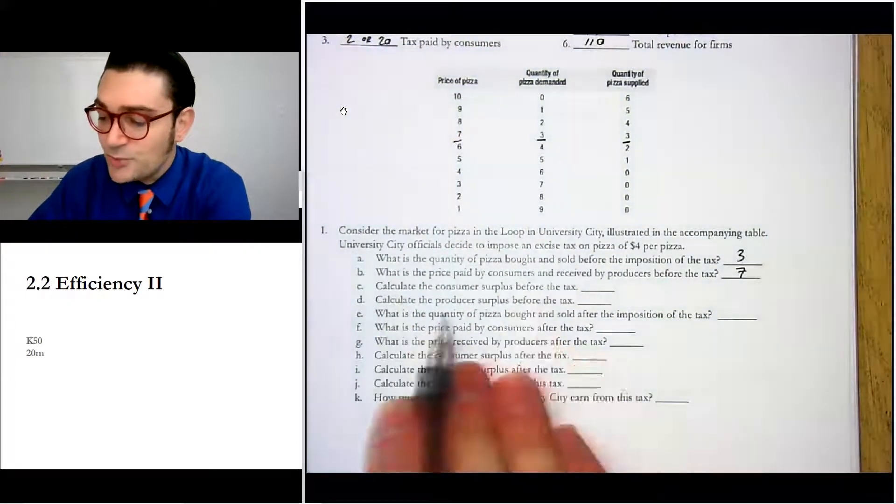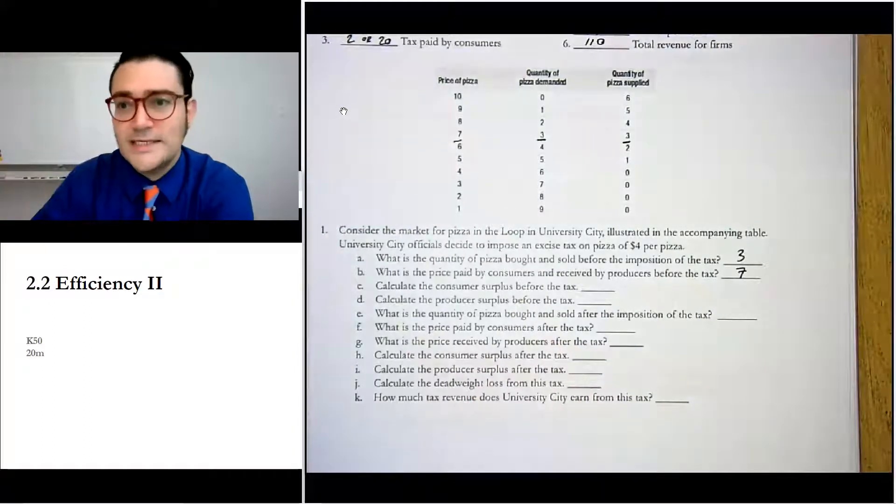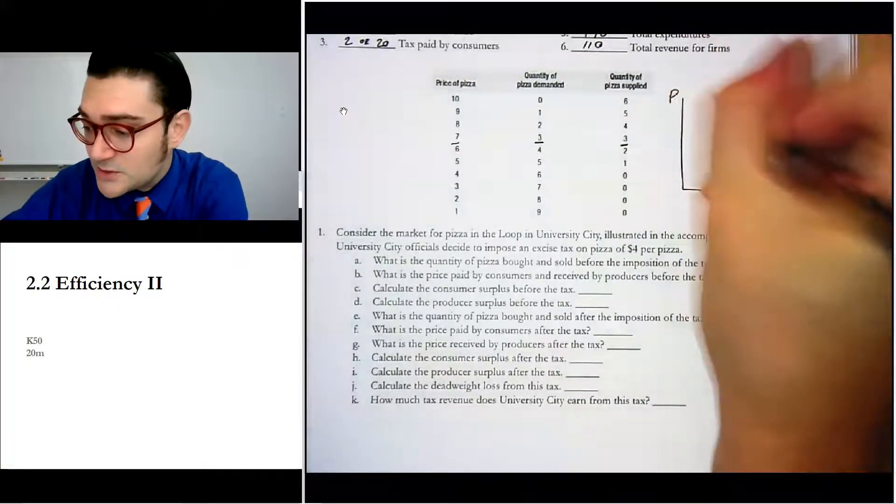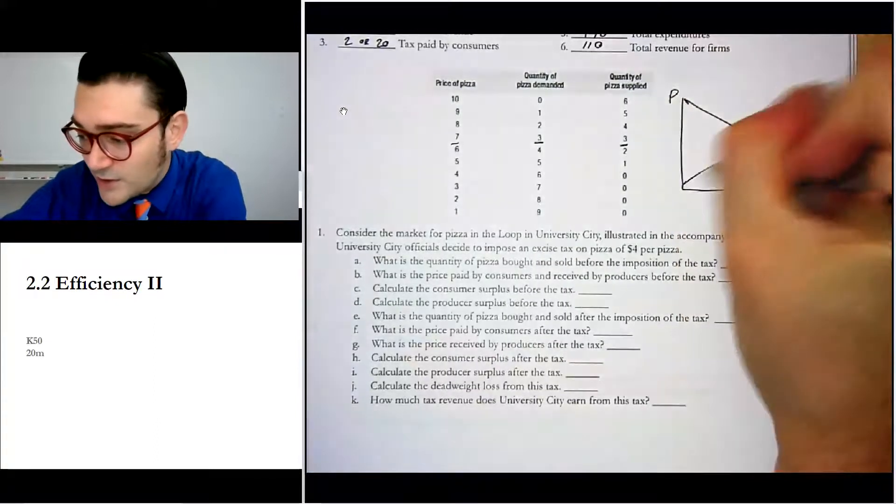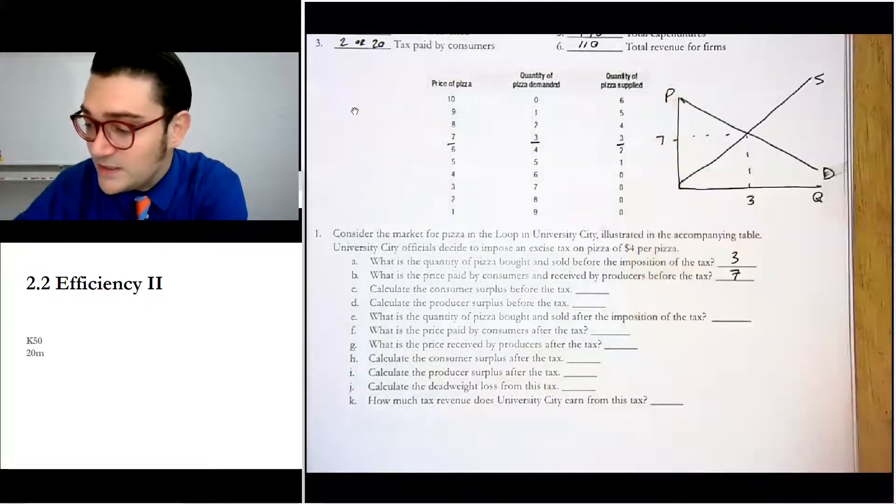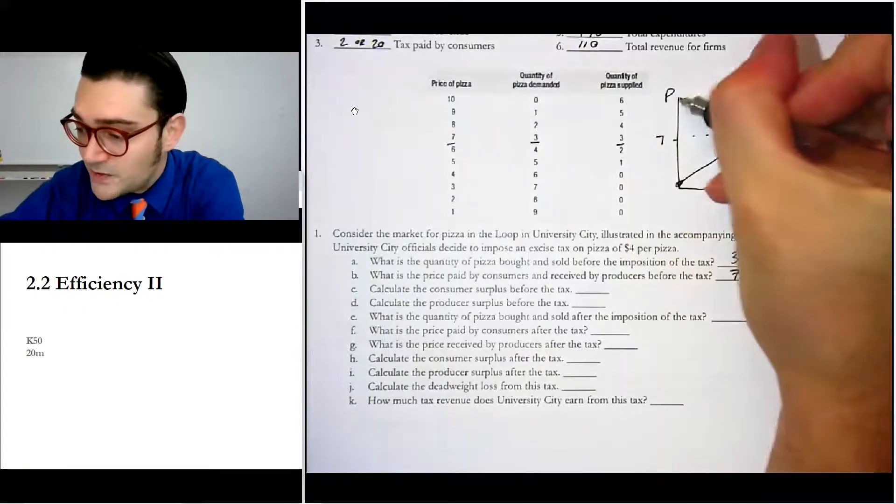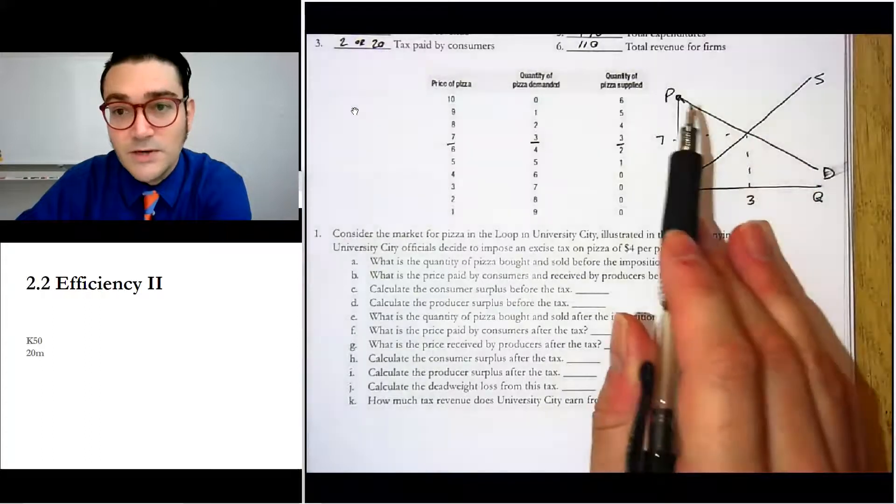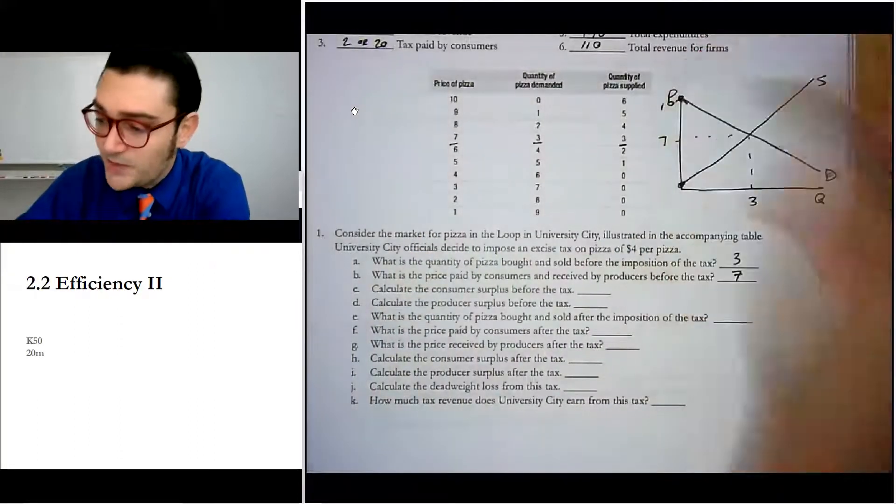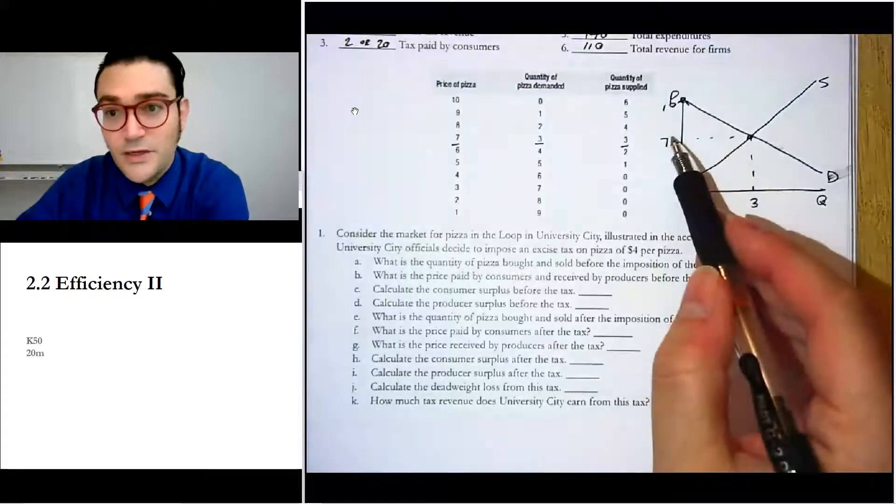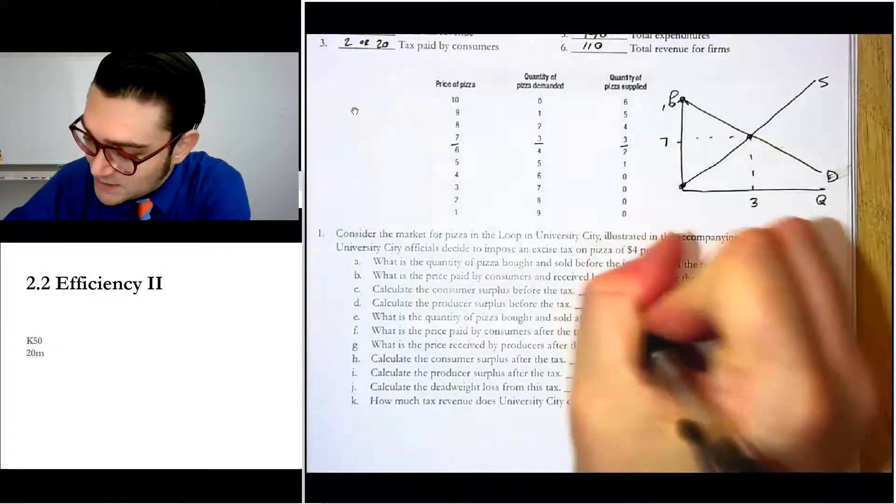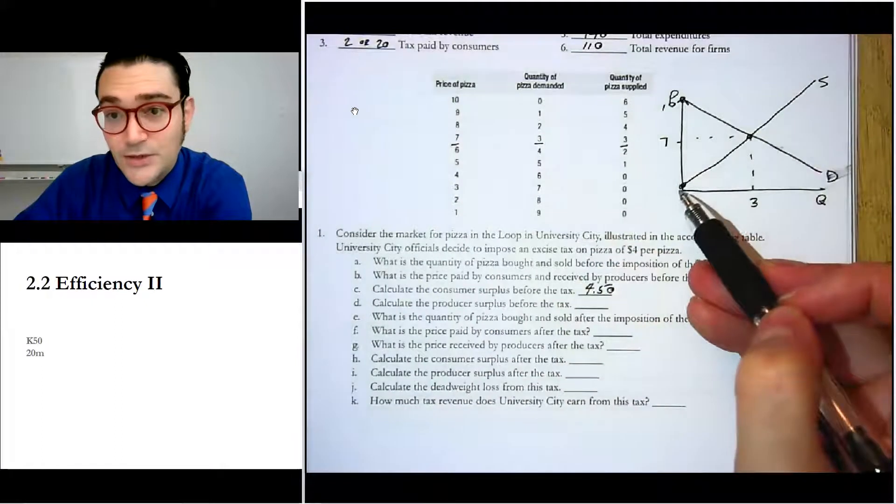Now this says calculate consumer and producer surplus before the tax. Again, this is going to require you to visualize a picture, and it can be a little bit difficult to do that. So actually, I take it back. I'm going to go ahead and just draw this graph so that you have a point of reference to see what we're talking about. We know that quantity is three and price is seven, but we need to know this point and we need to know this point on the triangle. So where does quantity demanded equal zero? At what price? Well, it happens at price ten.